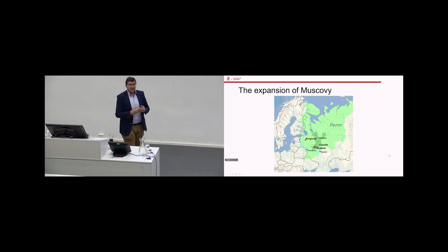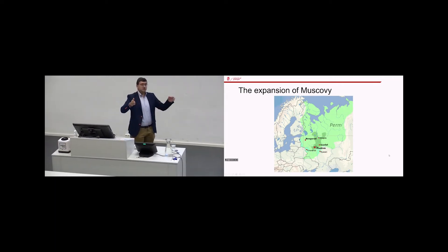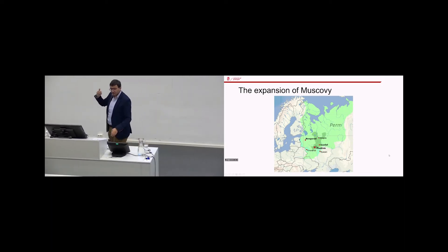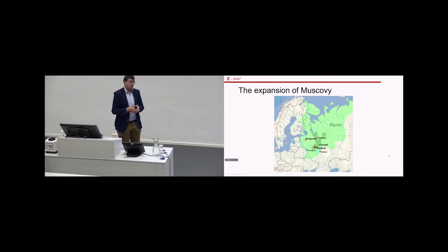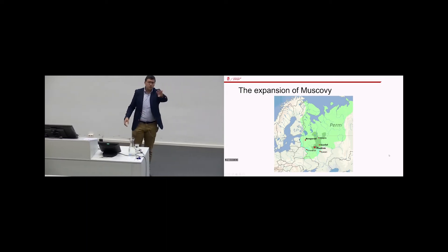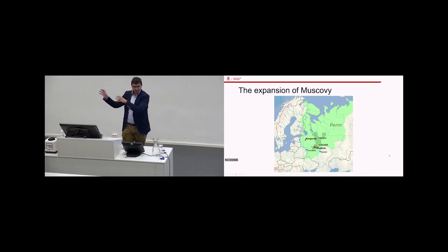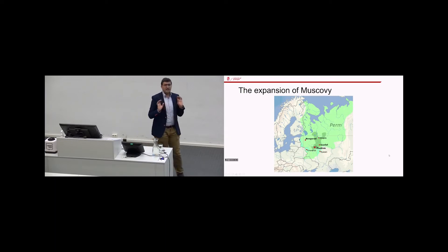If we go to the east, there is one principality, the principality of Moscow or Muscovy as it's usually called, which becomes the strongest. Moscow in Russian national history throws off what's called the Tartar yoke, the overlordship of the Mongols in the 15th century. The princes of Moscow proclaimed themselves to be Tsars of Russia in 1547. The word Tsar is of course a Russification of the word Caesar. They explicitly also put themselves in the tradition of the Eastern Roman Empire, of Byzantium, and their history becomes very different.